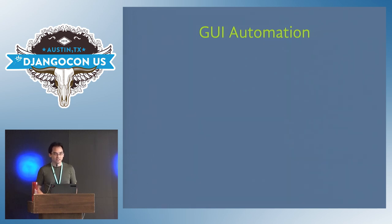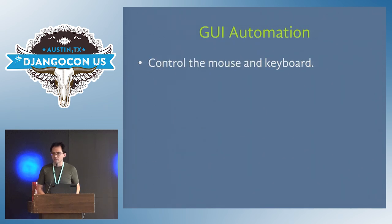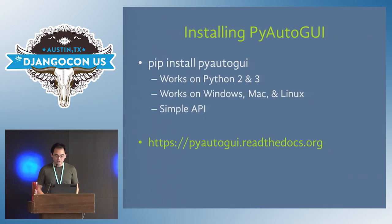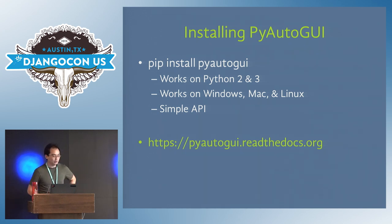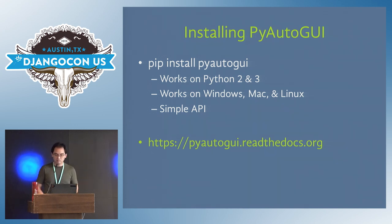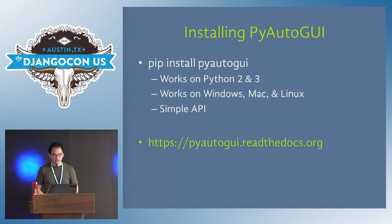GUI automation — graphical user interface automation. That sounds really complicated, but it basically just means controlling the mouse and keyboard from your program — having a Python script that can move the mouse around on its own. For this, I'll cover the PyAutoGUI module. You can install it with pip install pyautogui. It works on Python 2 and Python 3, and also on Windows, Linux, and Mac, with the same simple API documented at pyautogui.readthedocs.org.